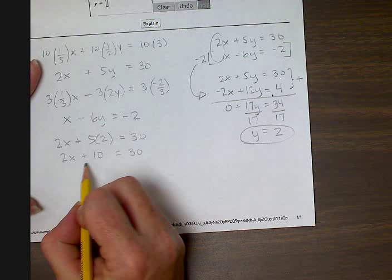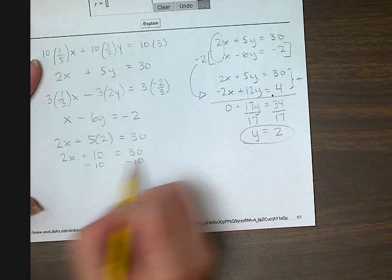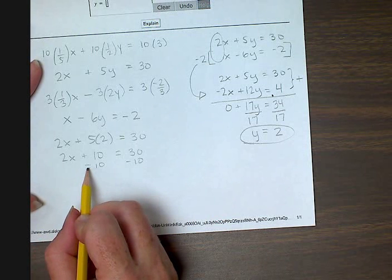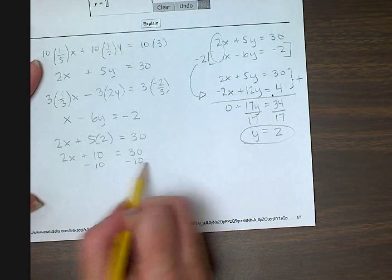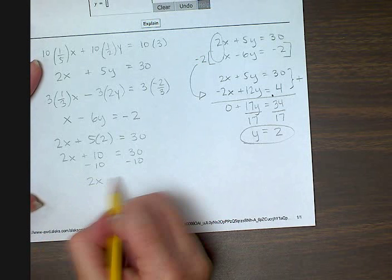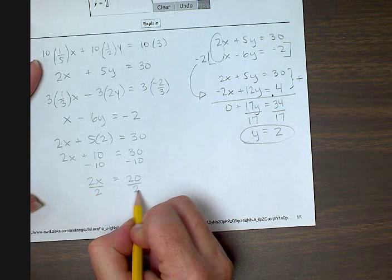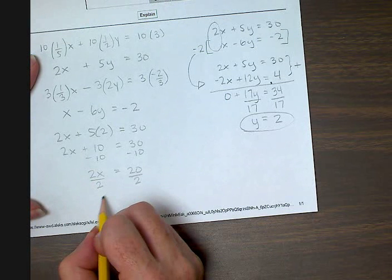That means I need to combine those numbers. So I have to move the ten to the other side by subtracting it. It's getting added, so I have to use the opposite operation and subtract. Then I get two x equals thirty minus ten is twenty. Now I have to divide by two. I get x by itself, and I get x equals ten.